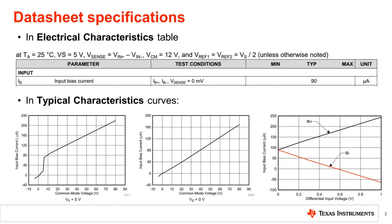Input bias current or IB is directly related to input impedance. IB is a common electrical specification found in the datasheet of a typical current sense amplifier or CSA for short. Whether the CSA is an analog current shunt monitor or a digital power monitor, in the electrical specifications table there is at least one IB specified.